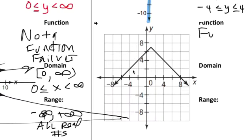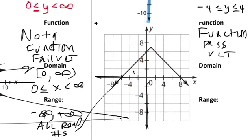This is a function, passes vertical line test. Domain, this goes on forever, so negative infinity. Positive side goes on forever too, positive infinity.